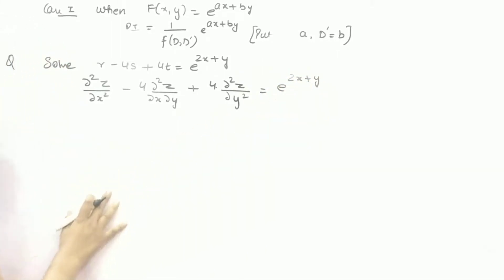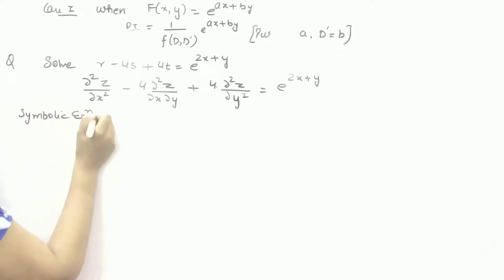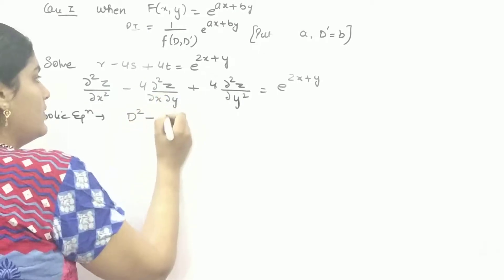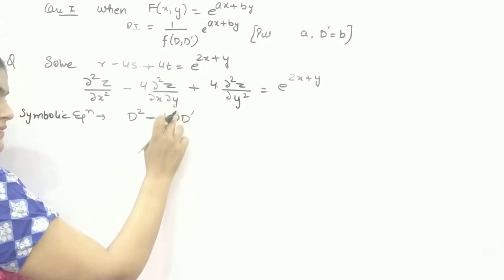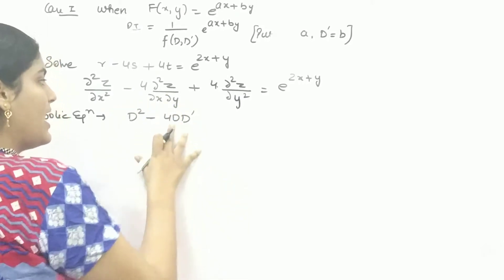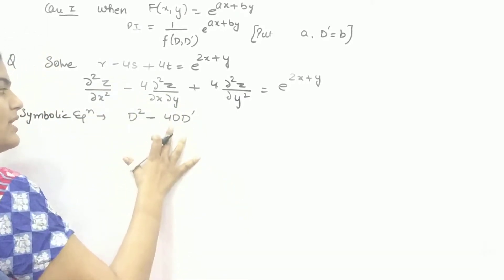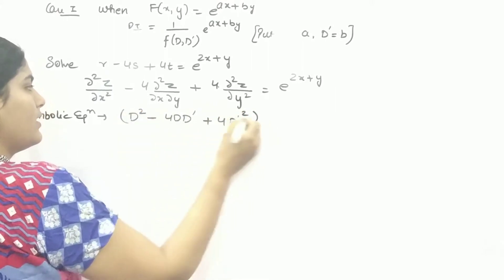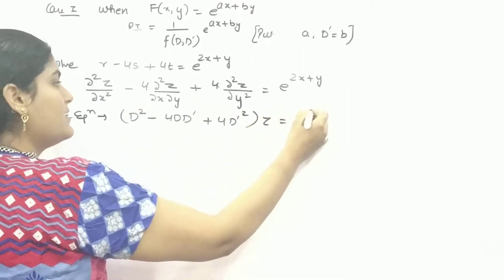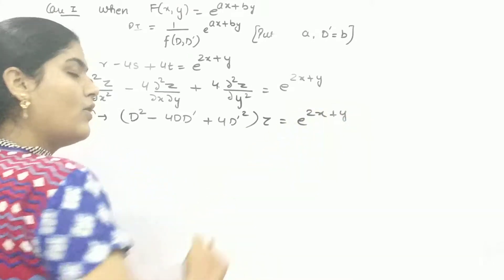So your symbolic representation, symbolic equation will be in the form of D squared minus 4DD dash, where D dash is del Z by del Y and del Z by del X is your capital D, plus 4D dash squared. And this is a function of Z.